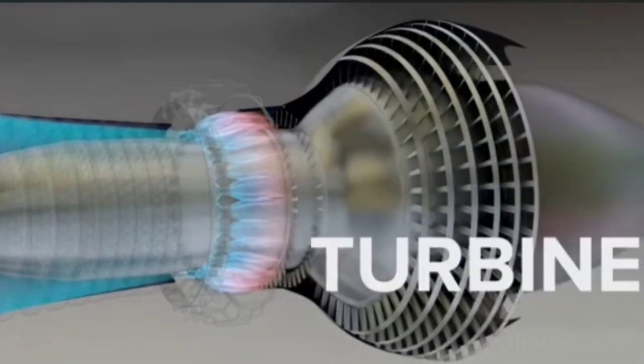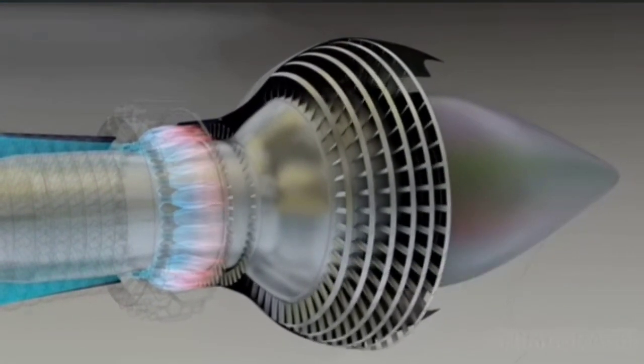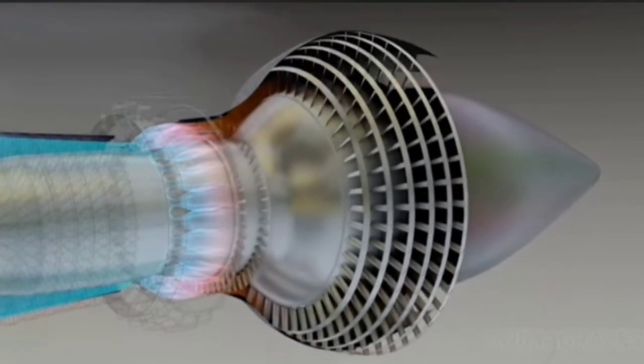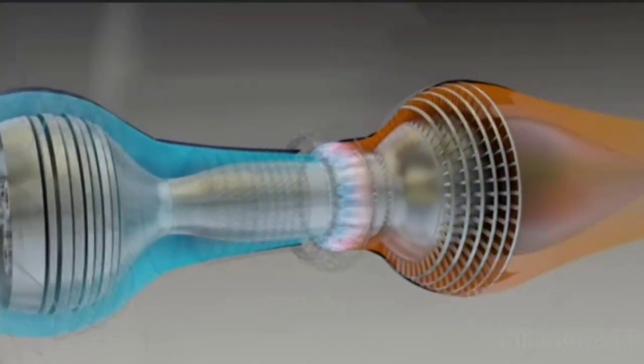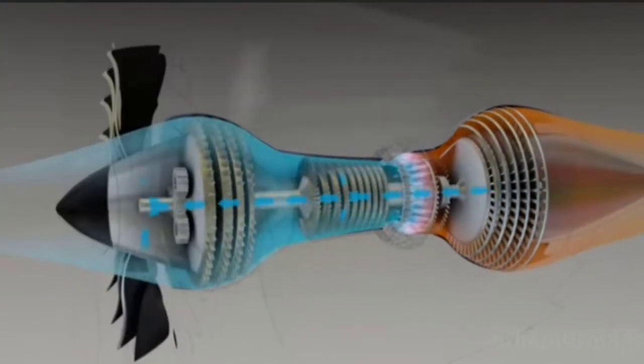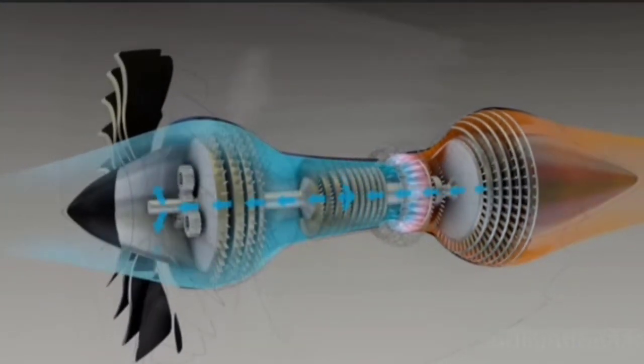Turbine. Turbines at the rear of the jet engine are powered by exhaust gases exiting the combustor. Much of the turbine power is used to turn the fan, while a smaller percentage powers the compressor stages.